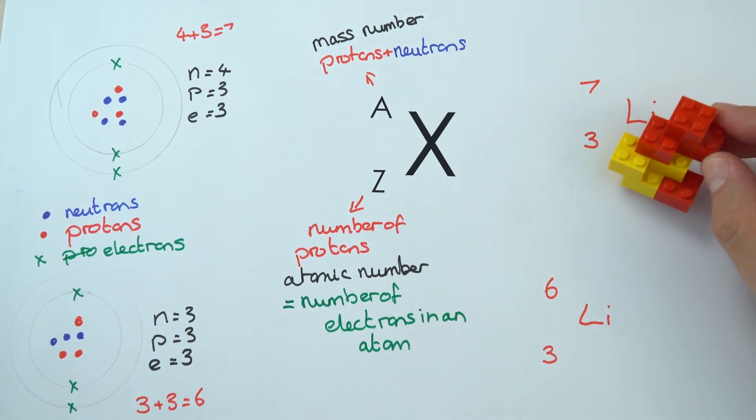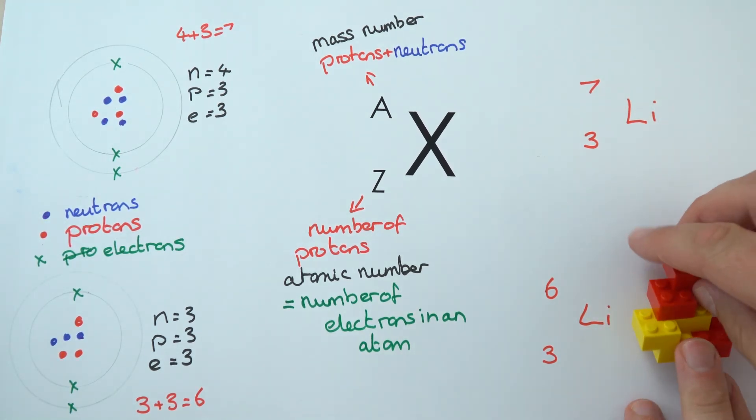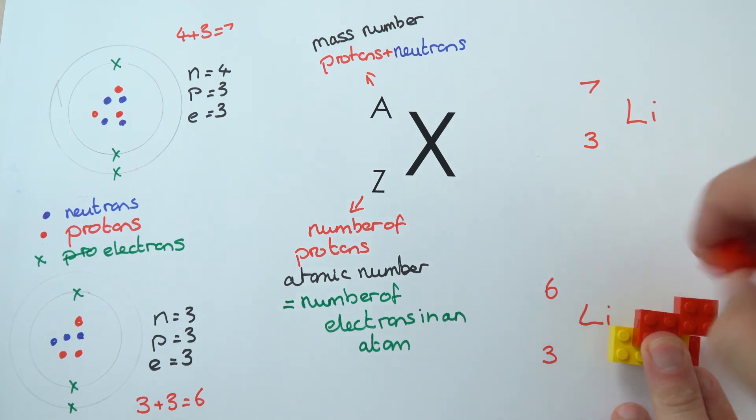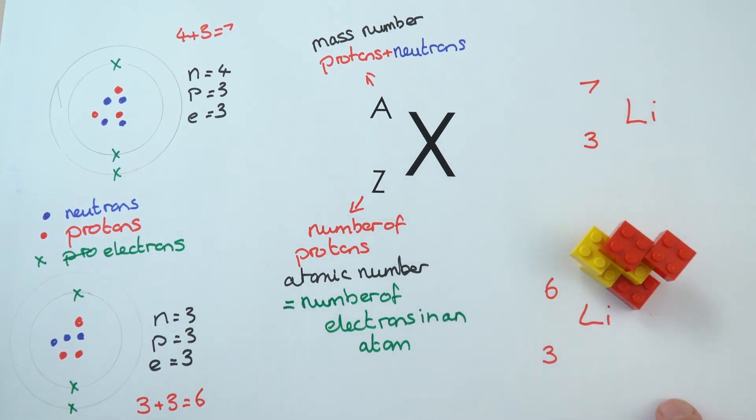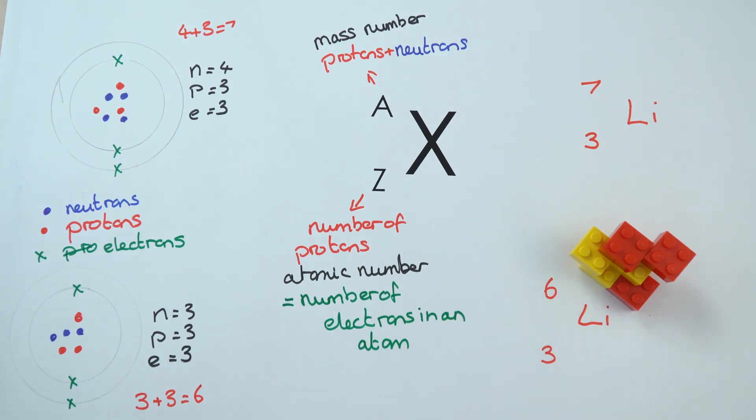But what we do is if we have the same element but then we have a different number of neutrons, it behaves in exactly the same way chemically but now it's got a different mass. And this is what we call an isotope.